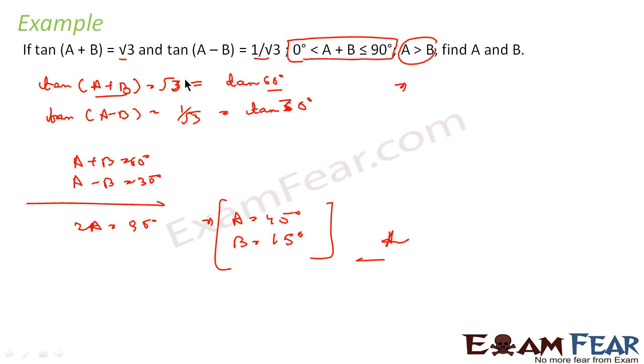The only thing is, instead of √3, I have to write something in the value of tan. Instead of 1/√3, I have to write something in the value of tan. So that tan(A + B) will be equal to tan θ₁, so I will say A + B = θ₁, and tan(A - B) will be equal to tan θ₂, so I will say A - B = θ₂. Thus we can solve this equation to get the value of A and B.